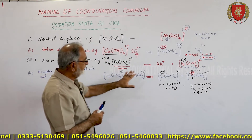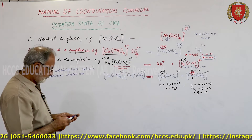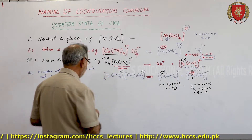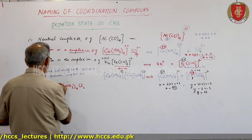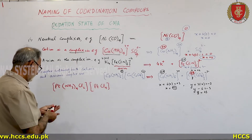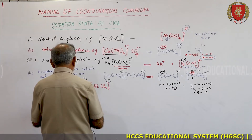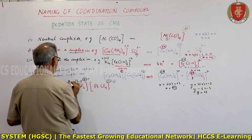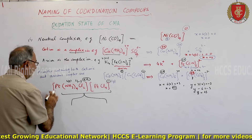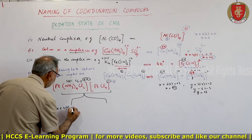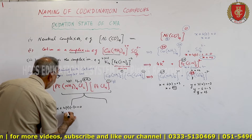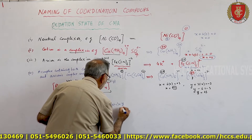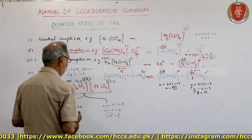This is how we find the oxidation state in different complexes. For another example, consider [Pt(NH3)4Cl2][PtCl4]. The cation [Pt(NH3)4Cl2] is positive: x + 4×0 + 2×(−1) = 0, so Pt is +2. For the anion [PtCl4]: +2 + 4×(−1) = y, giving y = −2, confirming that complex is 2−.